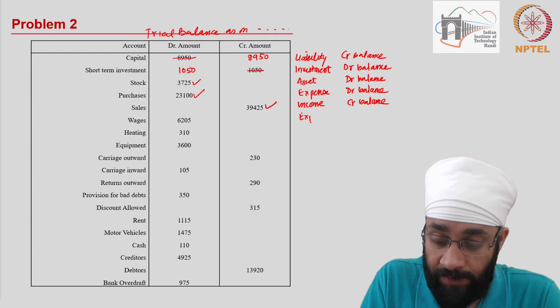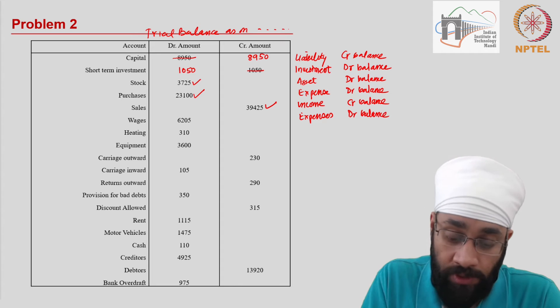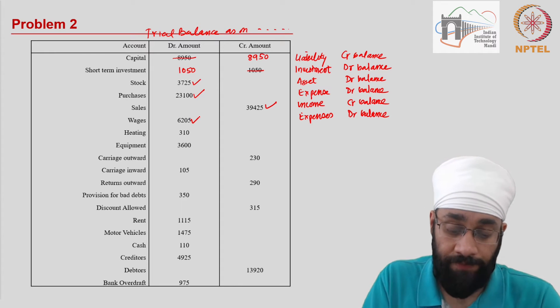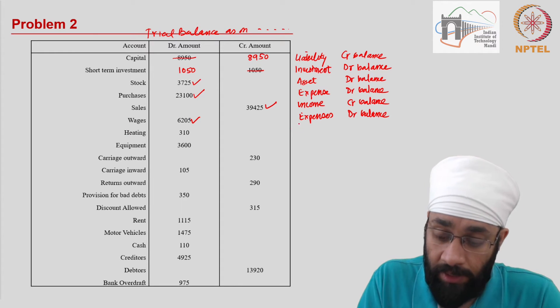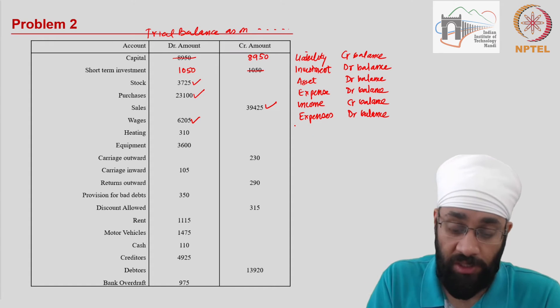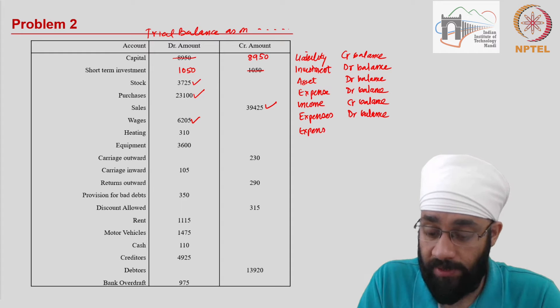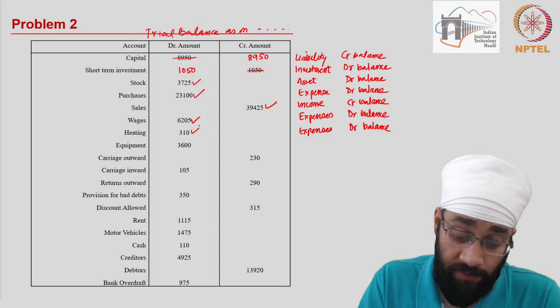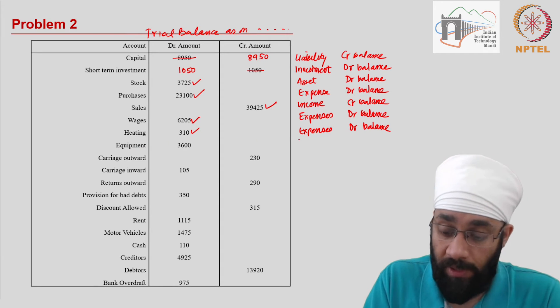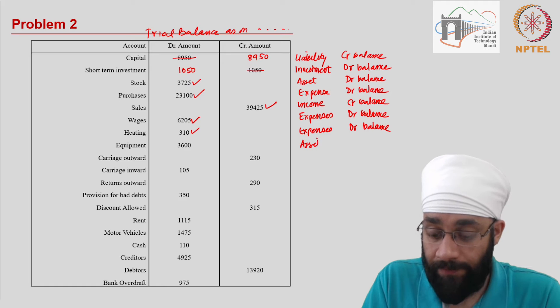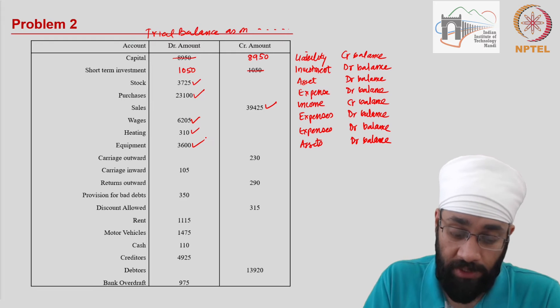Wages are expenses, and all expenses have debit balance, so this is correctly written. Heating is basically heating bills or whatever coal that you get for heating in a manufacturing setup. So this is also an expense. All expenses have debit balance, and this should be fine. Equipment are assets. Assets have debit balance, and this should be correct.